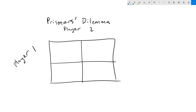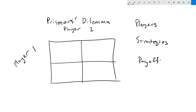In the last video, I talked about three different components of games. We have our players, we have our strategies, and finally we have our payoffs. On the screen here, I have a 2x2 grid, and I'm going to fill this out to talk about our three main components of games.